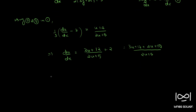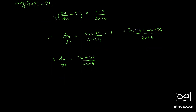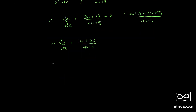Simplifying, du/dx equals (7u plus 22) divided by (2u plus 5). Now using the method of separation of variables, bring all u terms to one side. We get (2u plus 5) divided by (7u plus 22) du equal to dx.